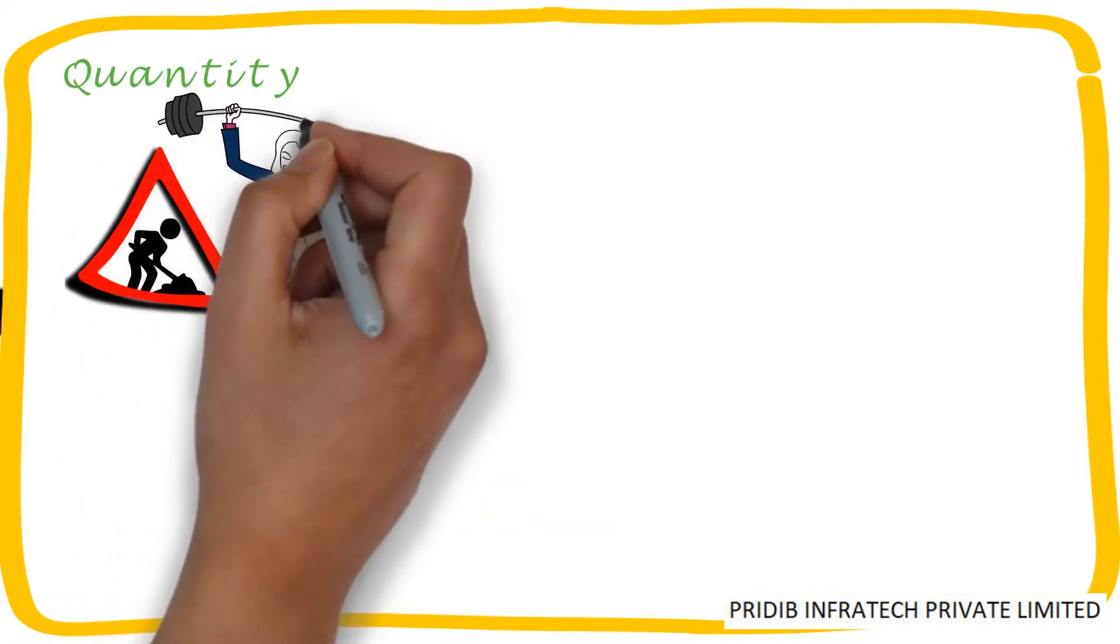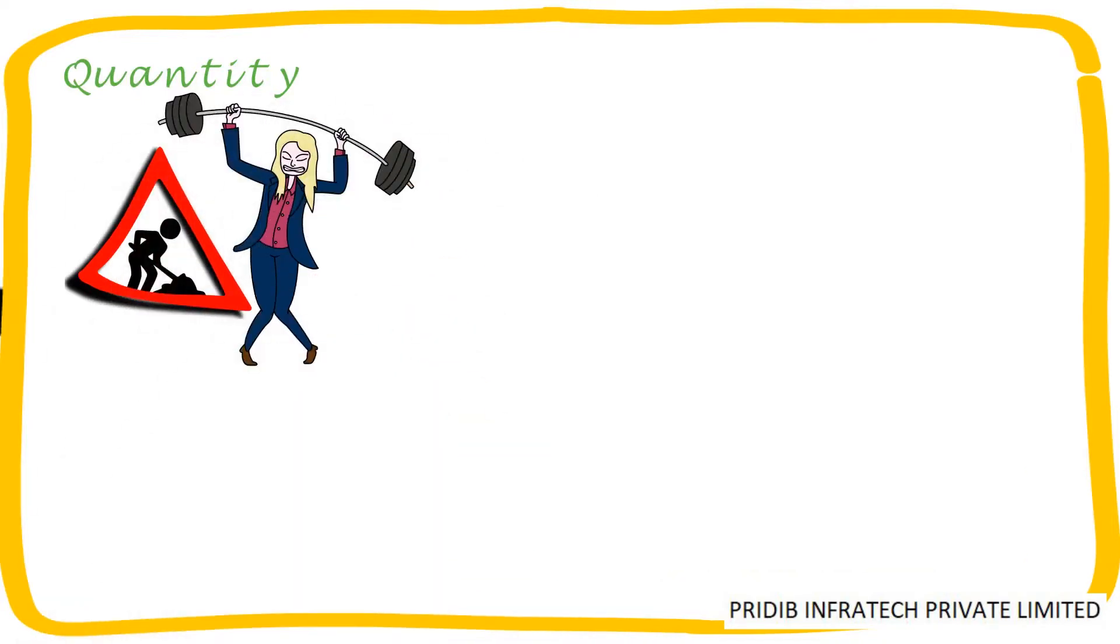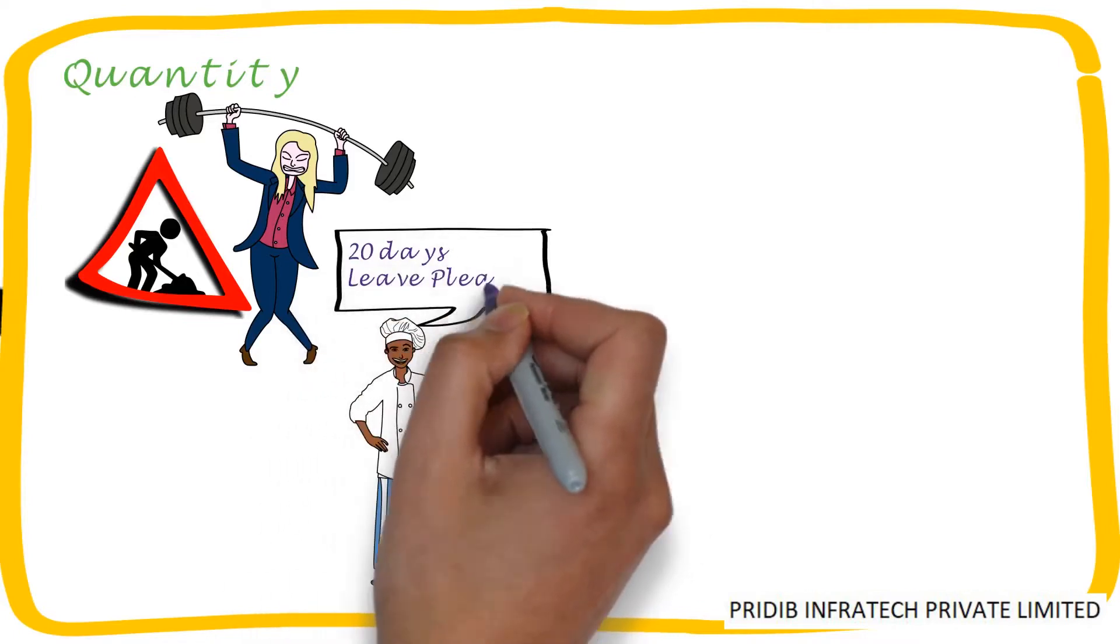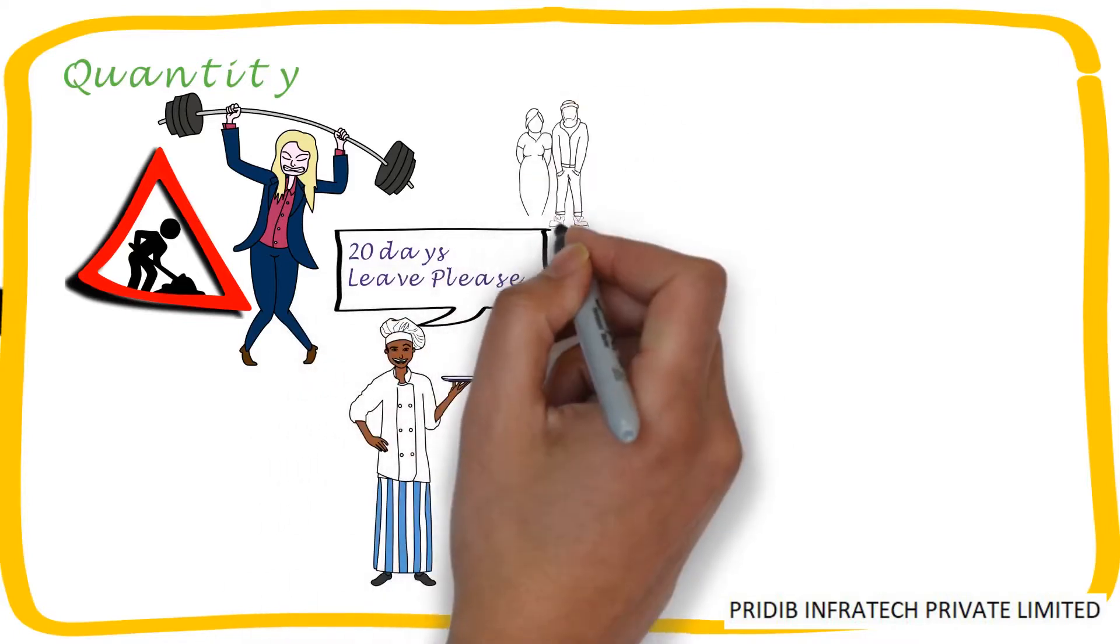The working capacity of an average person. In other words, how much work can be accomplished in a given period of time or for how many hours an average person can work. Number of leaves that are expected to be taken.